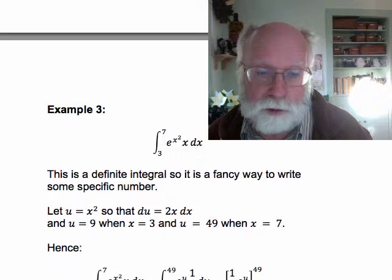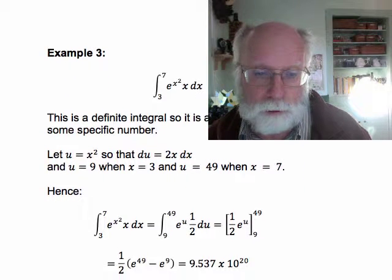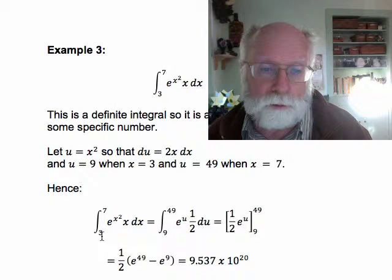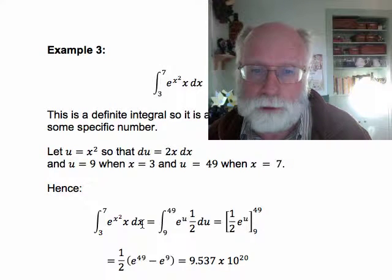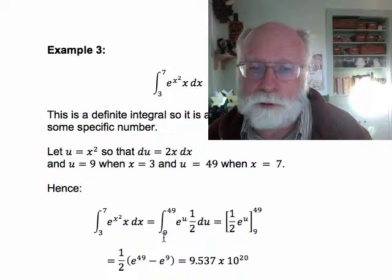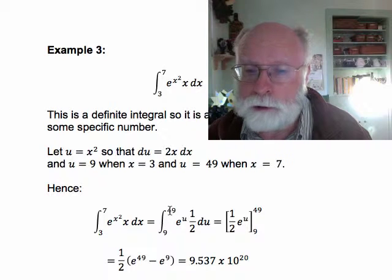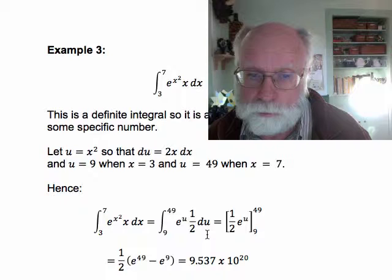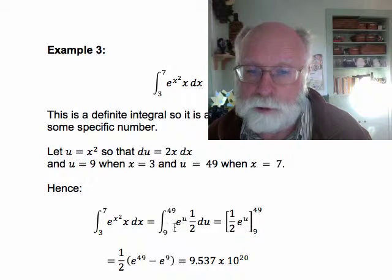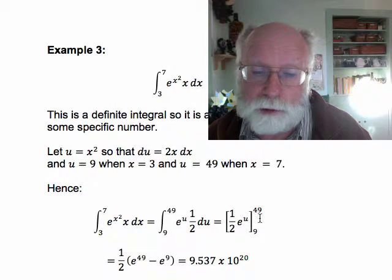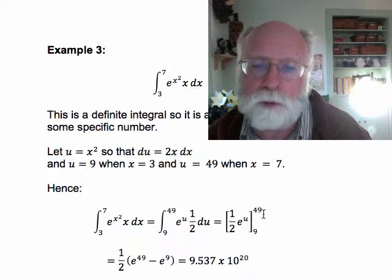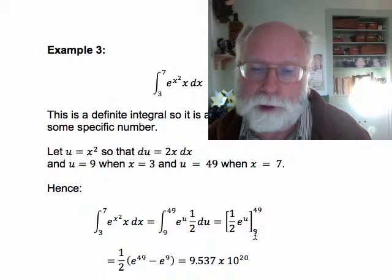So when we do the substitution, we're starting with the integral from 3 to 7 of e to the x squared times x dx, and that is the integral from 9 to 49 of e to the u times 1 half du. The integral of e to the u du is just e to the u, so we get 1 half e to the u, and we're going to be evaluating that antiderivative at 49 and subtracting the value at 9.